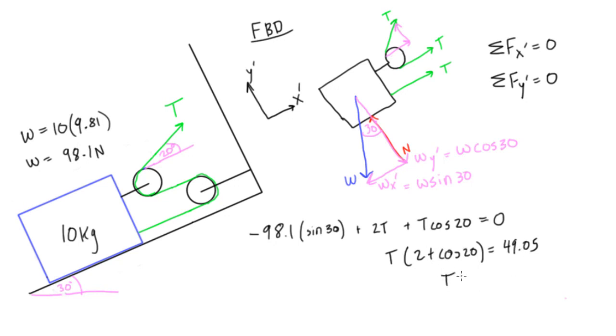So we'll have t is equal to 49.05 divided by all this stuff, 2 plus cos 20, cos 20, and we're going to solve for this. We're going to say the tension is going to be equal to, if you punch this in your calculator, you'll get 16.69 newtons.